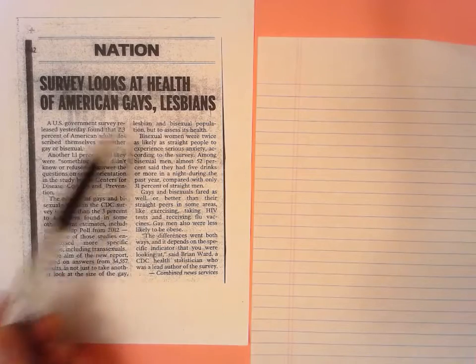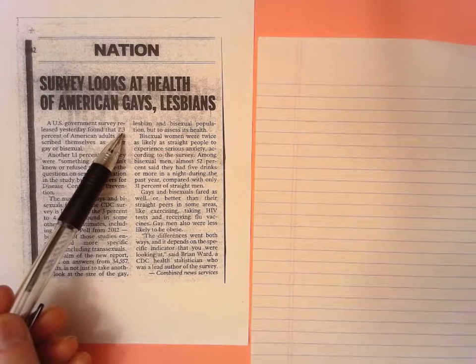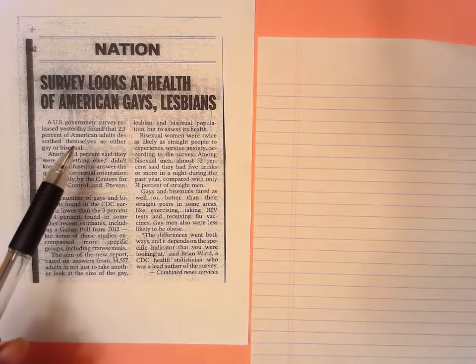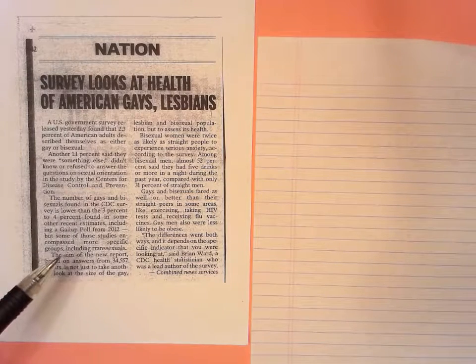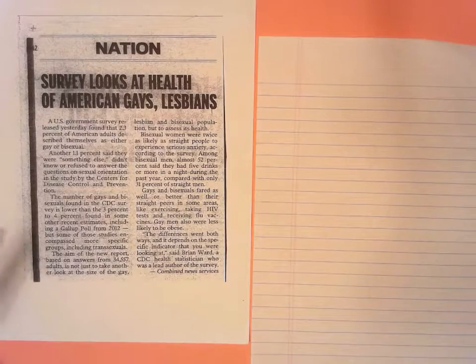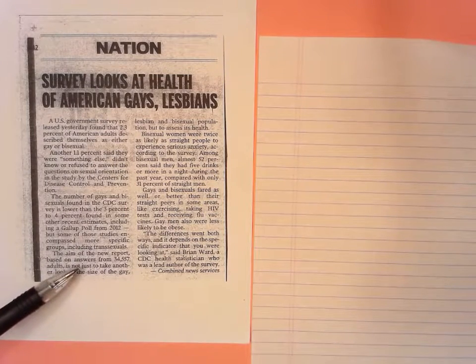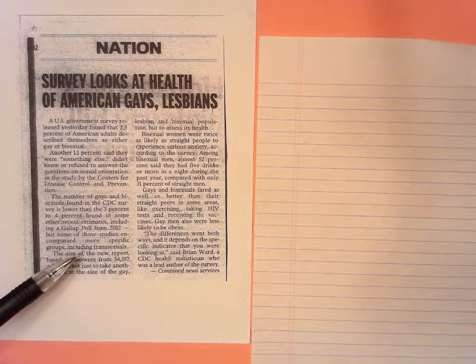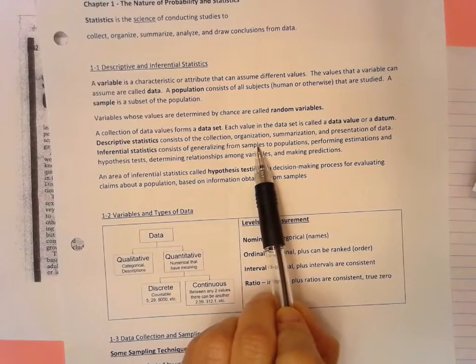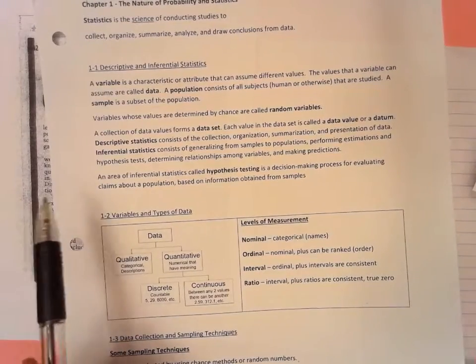So when we take a look at this, I'm looking at the top. Survey looks at health of American gays and lesbians. It found that 2.3% of American adults describe themselves as either gay or bisexual. Did they ask all American adults? No. As you read down this article, they actually asked 34,557 adults. That's it. And from that, most likely 2.3% of the sample identified themselves as either gay or bisexual. So they inferred that the entire population, the makeup was the same for the entire population. That's called inferential statistics because it generalized from the sample to the entire population.